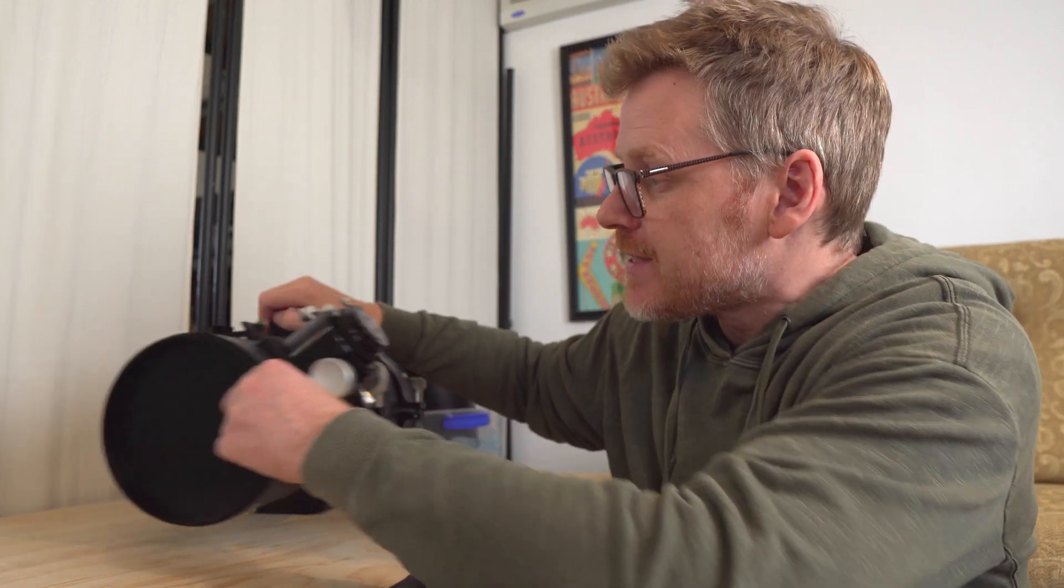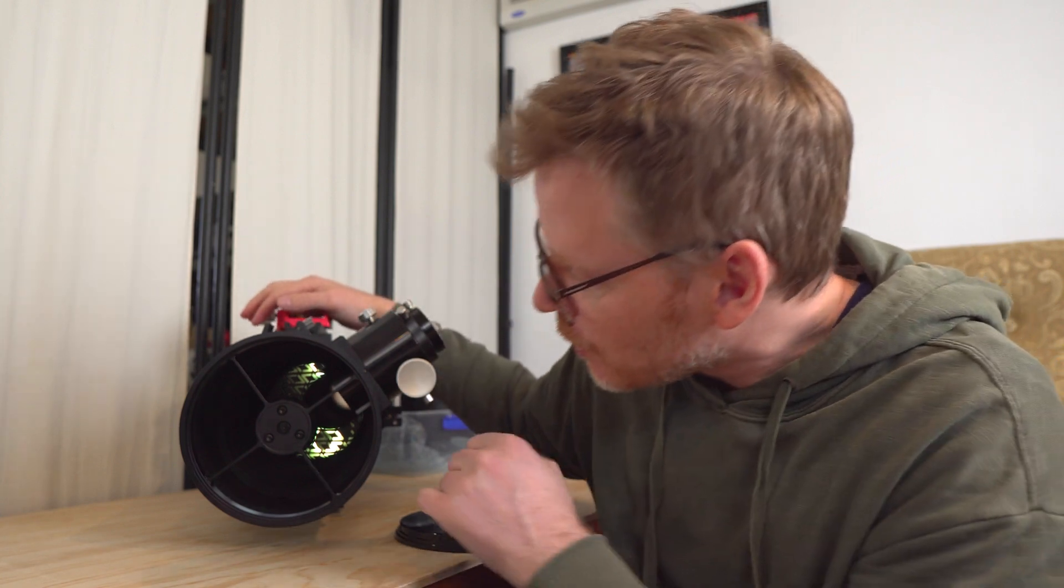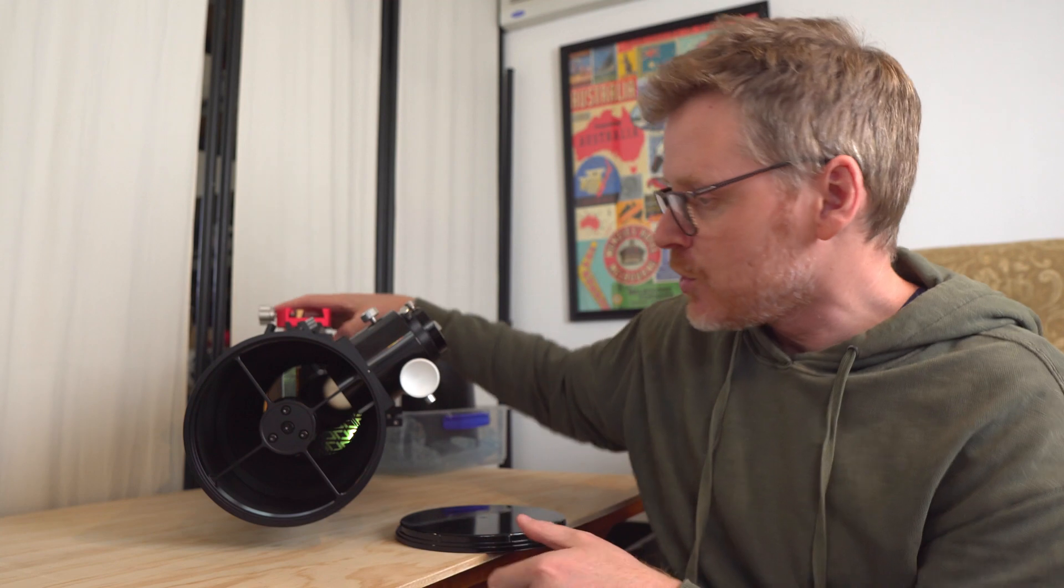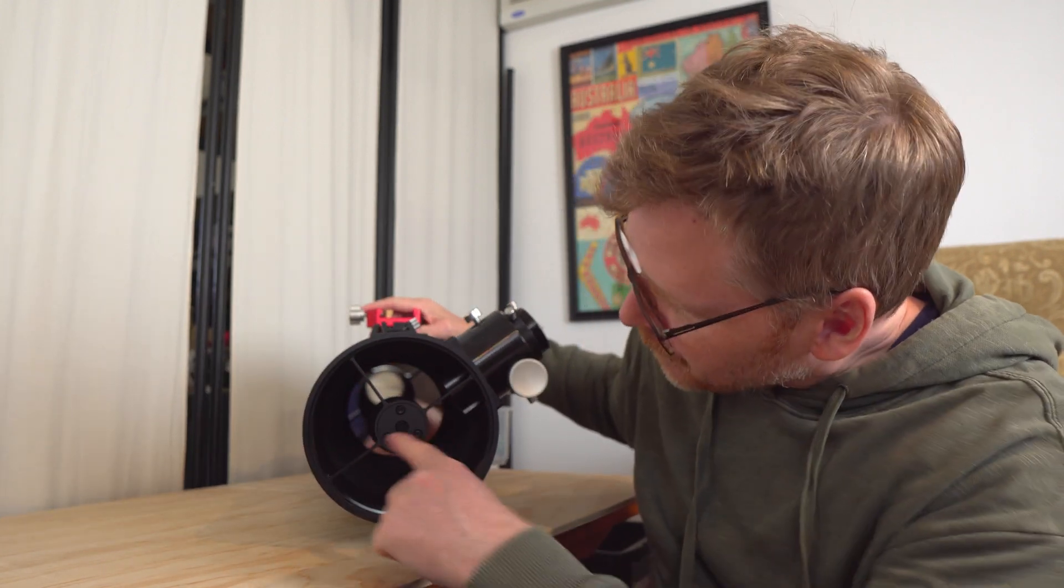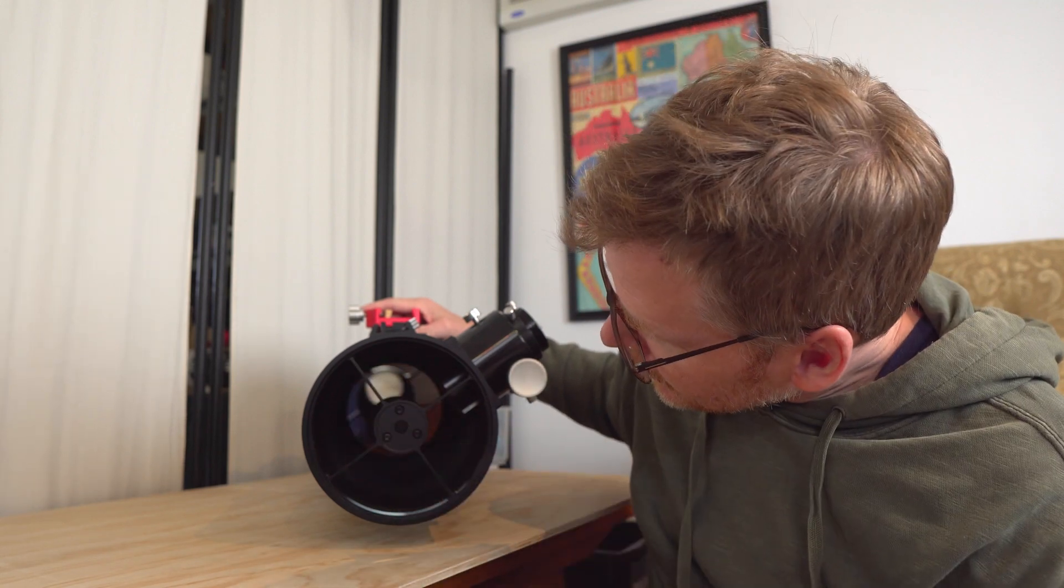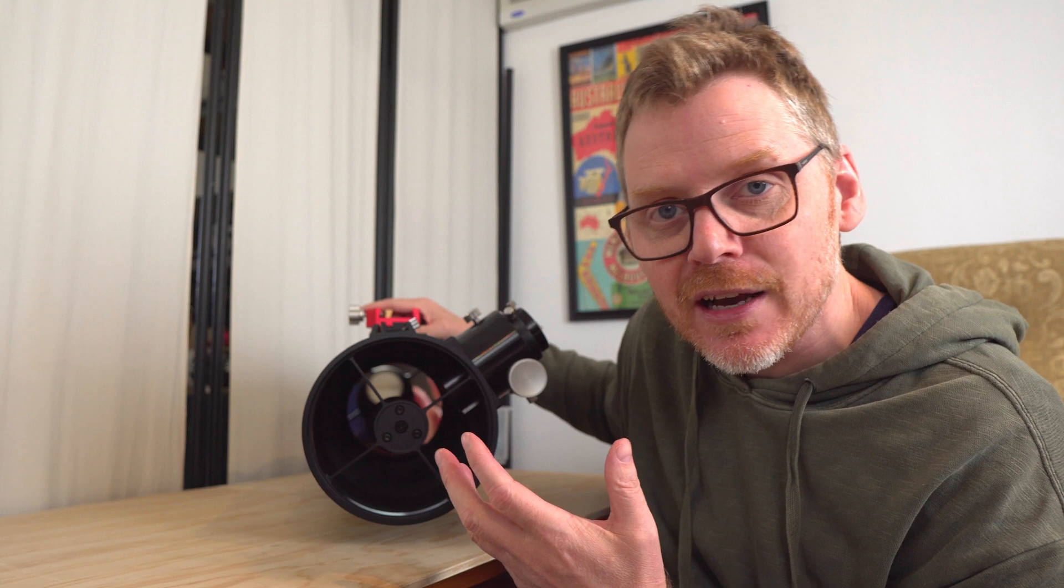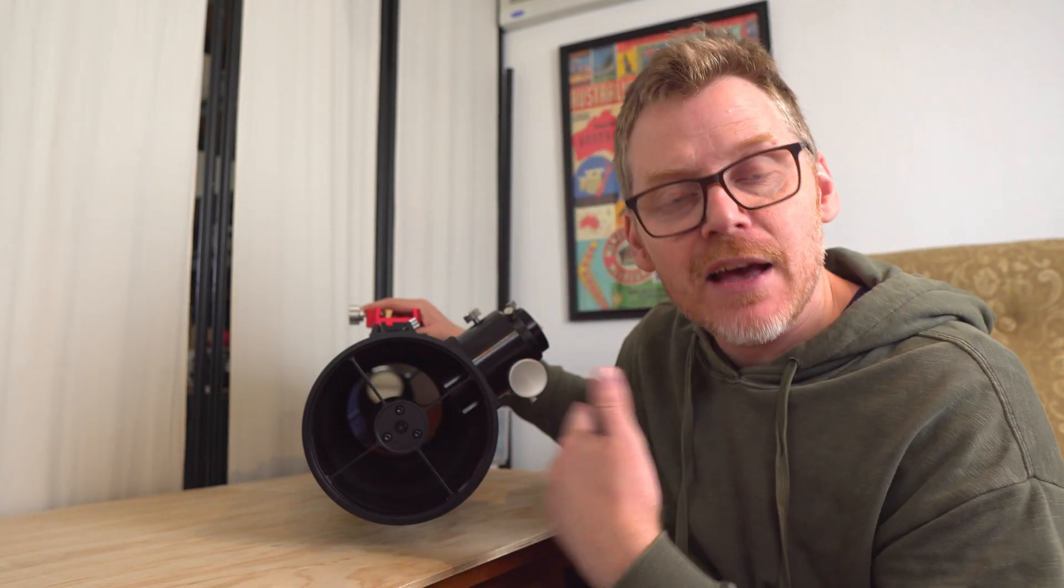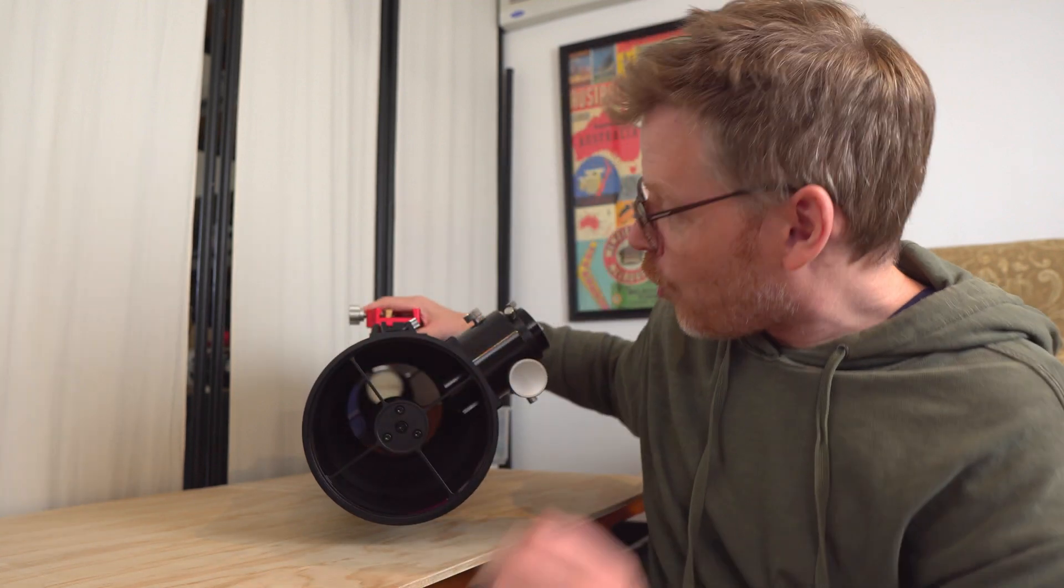At the front here, obviously the other big reason I was interested in one of these is because it has this spider right up at the front here. So hopefully you can see that. You've got this big nice spider here, which looks really solid, really rigid. So I'm hoping that's going to help with keeping the secondary mirror in collimation. And then it's nicely, heavily baffled down the tube as well. So all in all...